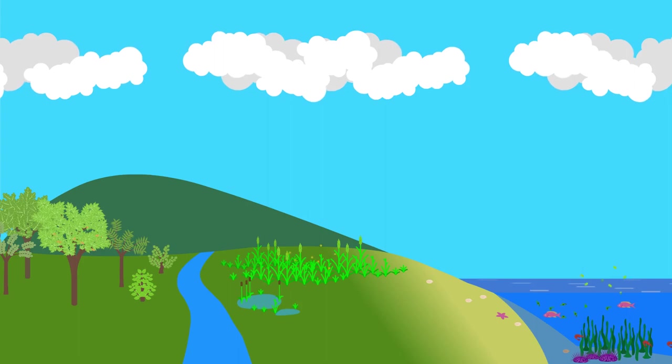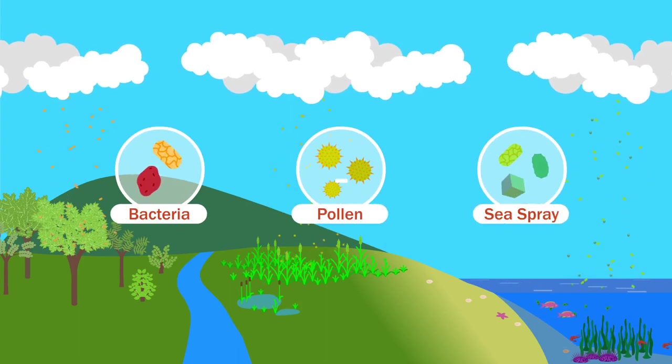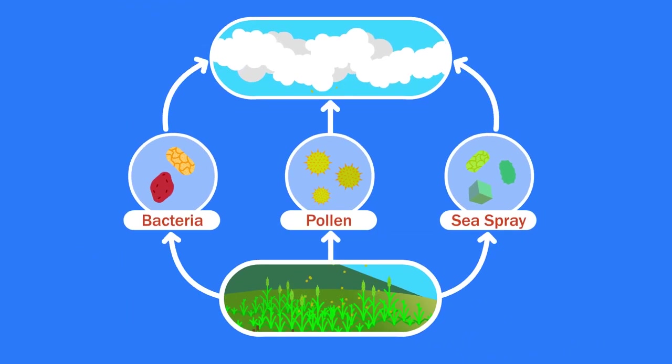Forests, grasslands, and marine ecosystems each produce their own kind of condensation nuclei as well. In this way, plants seed clouds.